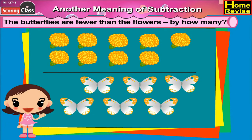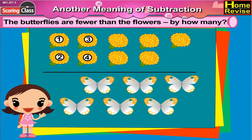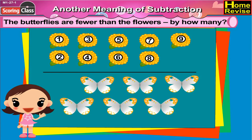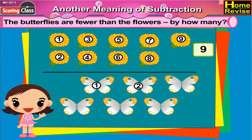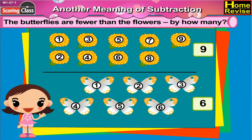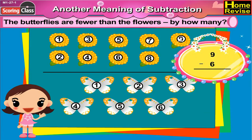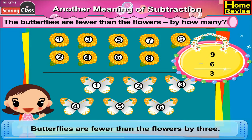The butterflies are fewer than the flowers. By how many? First, let us count the flowers: 1, 2, 3, 4, 5, 6, 7, 8, 9. So there are 9 flowers. And how many butterflies? 1, 2, 3, 4, 5, 6. 6 butterflies. Now, definitely, butterflies are fewer than flowers. By how many? You are right, by 3. So butterflies are 3 fewer than the flowers.